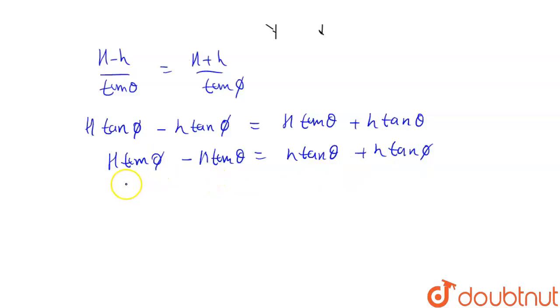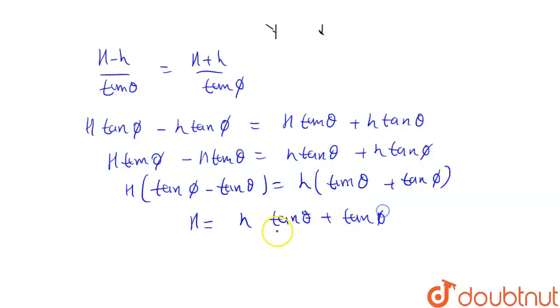If we take common H here, this becomes H times tan phi minus tan theta equals h times tan theta plus tan phi. From here, the value of H comes out to be h times tan theta plus tan phi divided by tan phi minus tan theta. So this is the value of H.